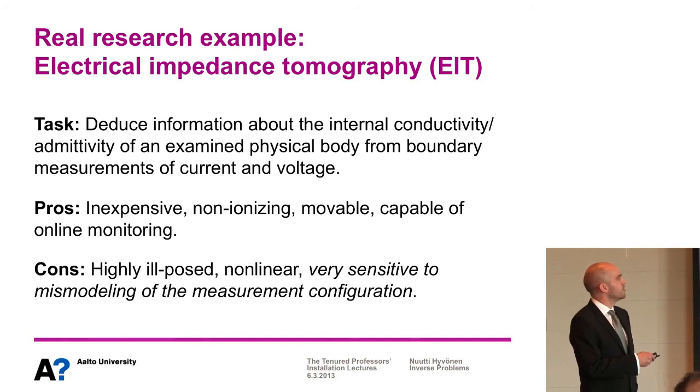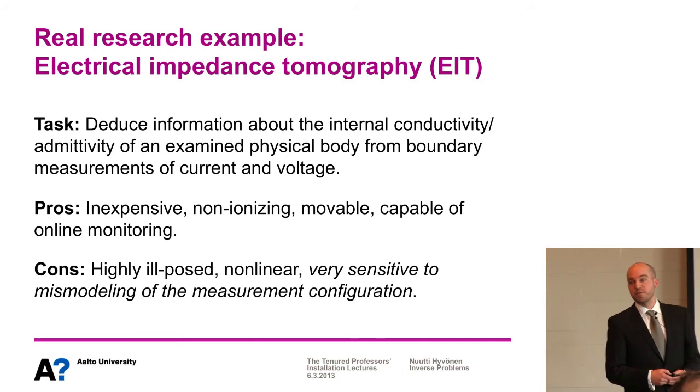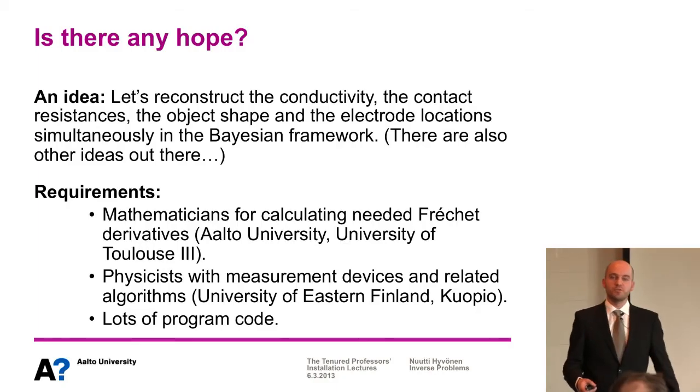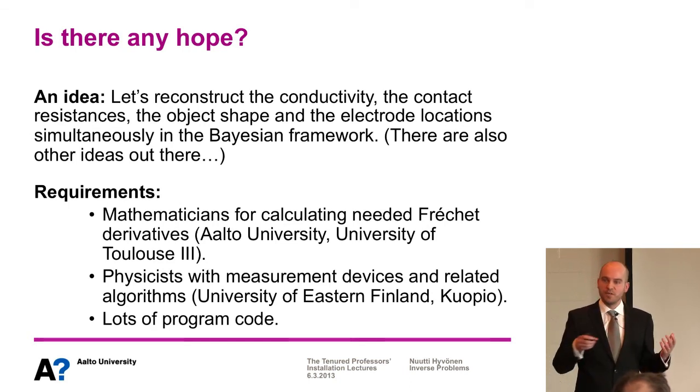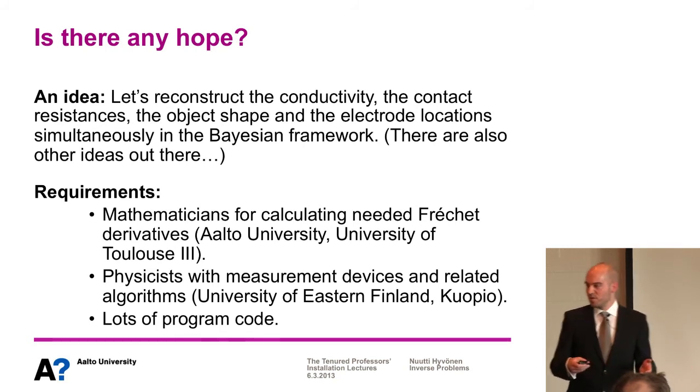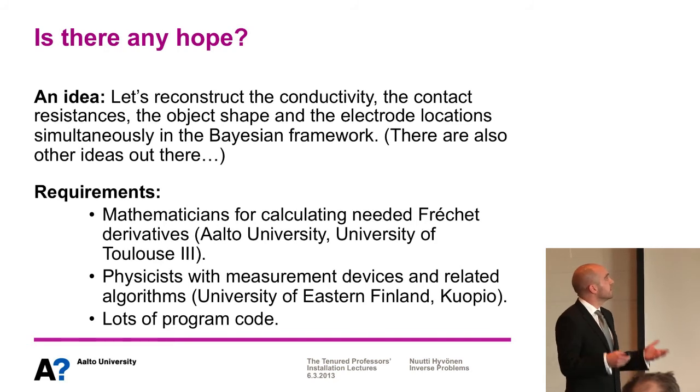It's also non-linear, which makes it even more difficult — for example, X-ray tomography is linear, but this is non-linear. And finally, perhaps the most important obstacle to real-life use is that measurements with electrodes on the boundary of a body are really sensitive to mismodelling of the measurement configuration. Within the Bayesian framework, however, we have been able to ask: can we reconstruct the conductivity, the boundary shape of the object, the electrode locations, and even the contact impedances at the electrode-object interfaces simultaneously?